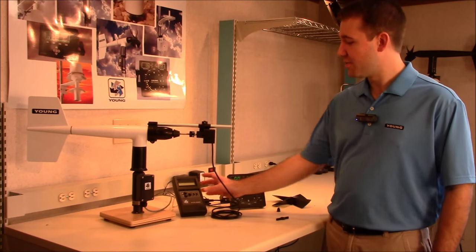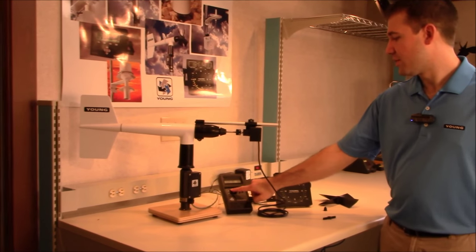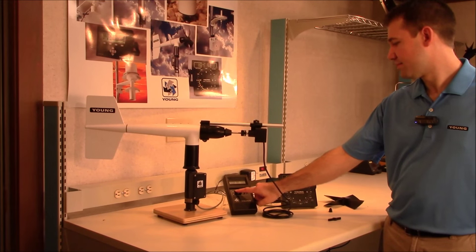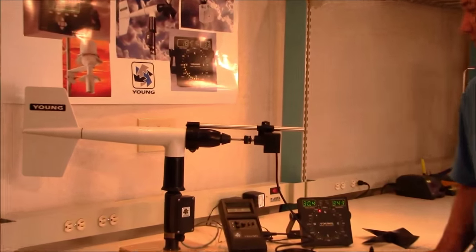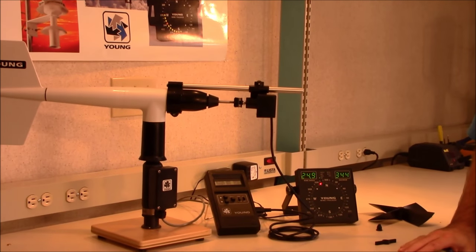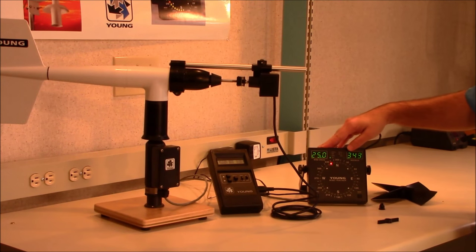At this point, we'll turn on the anemometer drive and set it to 5,100 RPM. And now that it's stabilized, you can see that we're reading 25 meters per second on the wind tracker.